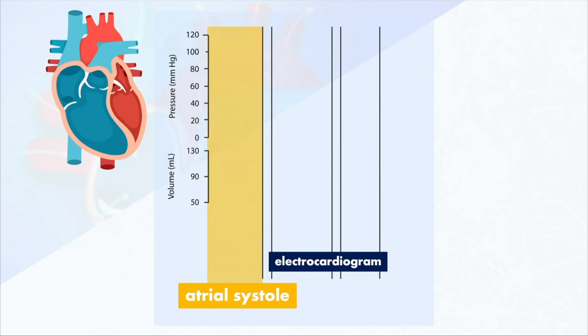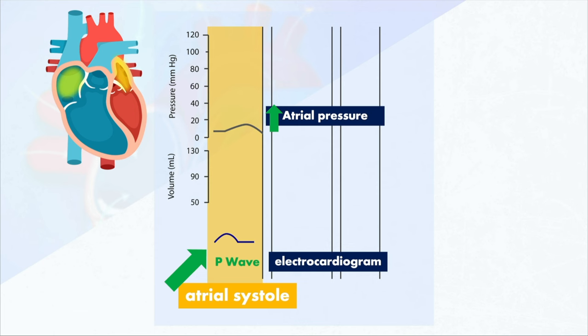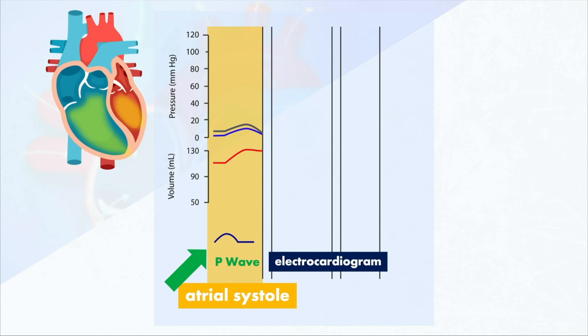That's going to come back up in a later video when we talk about stroke volume. But we've discussed all the major things that happen during atrial systole. To summarize: the first phase of the cardiac cycle is atrial systole. On the electrocardiogram, the P wave shows us the depolarization of the atria. After atrial depolarization, we get atrial contraction. When the atria contract, that increases the pressure in the atria and pushes the last bit of blood into the ventricles. We'll also see a bump in ventricular pressure, and now we have the end diastolic volume. We're now ready for the ventricles to contract and send that blood throughout the body.